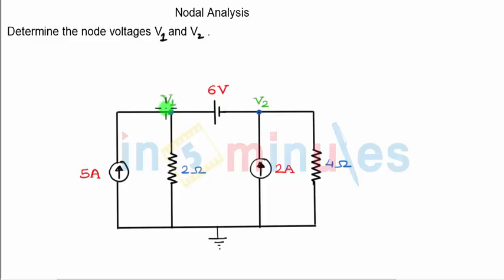You can only write V1 equal to six volts if V2 was ground node, or we would write V2 equal to minus six volts if V1 was ground node, which is not the case right now.